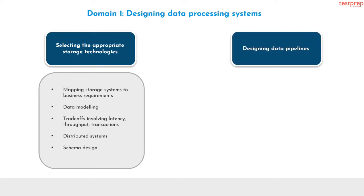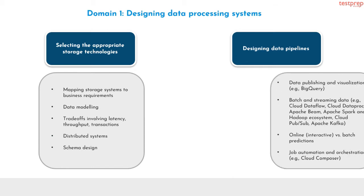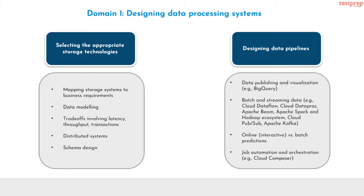Number 2, designing data pipelines. It contains 5 subtopics: first, data publishing and visualization, for example BigQuery; second, batch and streaming data, for example Cloud Dataflow, Cloud Dataproc, Apache Beam, Apache Spark, and Hadoop ecosystem, Cloud Pub/Sub, Apache Kafka; third, online interactive versus batch predictions; fourth, job automation and orchestration, for example Cloud Composer.